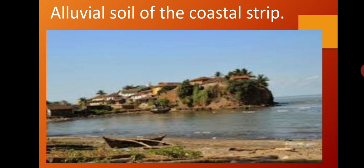Next, we have alluvial soil of the coastal streams. The majority of rivers flowing in the Konkan region are short and flow with great speed. Therefore, the alluvium brought by them gets deposited at the mouth of the rivers. So, in the Konkan area, you will see alluvial type of soil at the coastal streams.